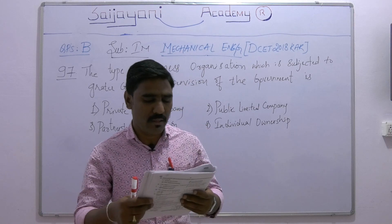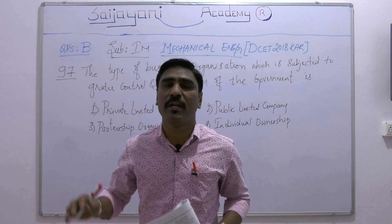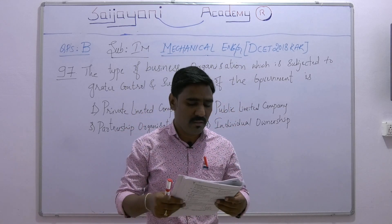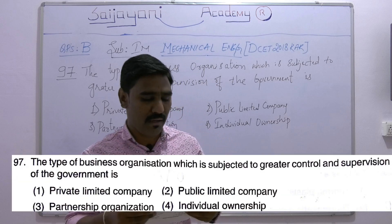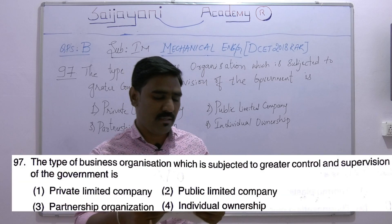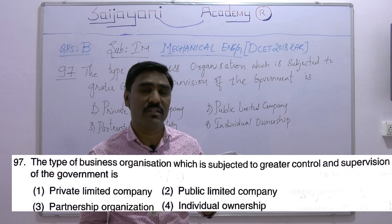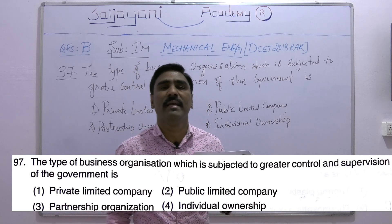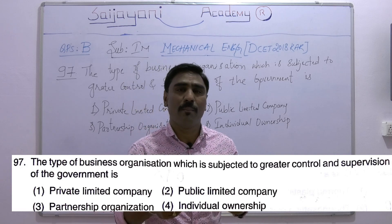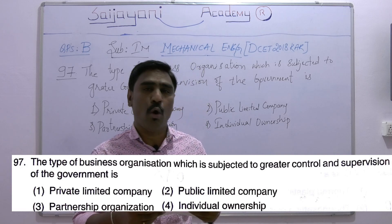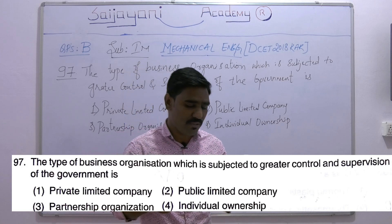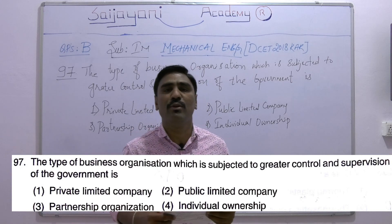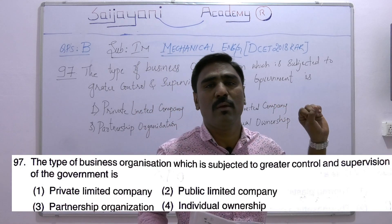Today we will discuss questions related to industrial management. Question number 97: the type of business organization which is subjected to greater control and supervision of the government is — option one: private limited company, option two: public limited company, option three: partnership organization, and option four: individual ownership.